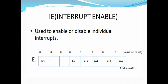The IE register is an 8-bit register and it is bit-addressable, meaning you can access a single bit of this register. The LSB, D0 bit, is EX0 — for enabling or disabling external interrupt 0. ET0 is for enabling or disabling the timer 0 overflow interrupt. EX1 is for external interrupt 1. ET1 is for timer 1 interrupt, and ES is for enabling or disabling the serial communication interrupt.